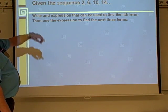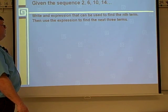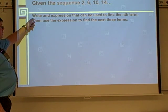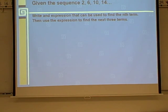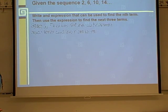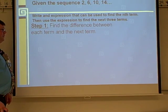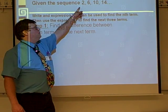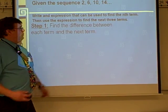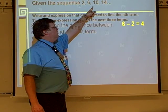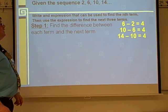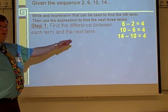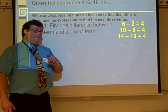Here we're given a sequence: 2, 6, 10, 14. It's not in a table, but we can work with it the same way. We're going to write an expression that can be used to find the nth term, then use the expression to find the next three terms. Step one: find the difference between each term and the next. 6 minus 2 is 4, 10 minus 6 is 4, 14 minus 10 is 4. This confirms that we do have an arithmetic sequence.